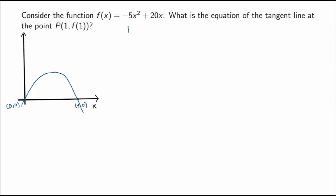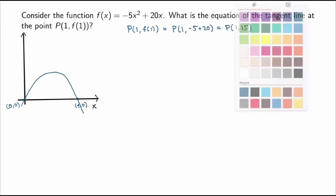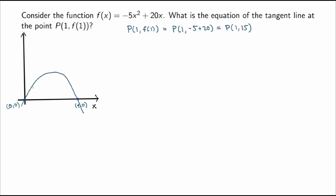The point I'm interested in is (1, f(1)), so I calculate the y-coordinate by substituting x = 1: I get -5 + 20, so the y-coordinate is 15. On my graph the point is somewhere here, and I can sketch the tangent line. Right away I can see the slope of the tangent line should be positive.